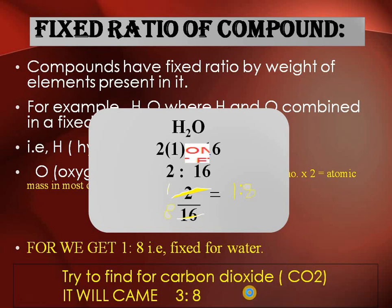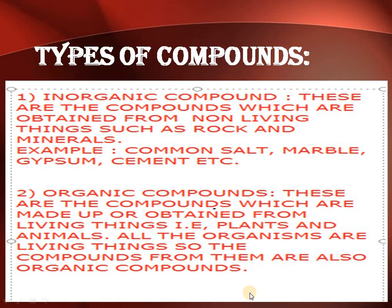Moving to the types of compounds: compounds are of two types — inorganic compounds and organic compounds. Inorganic compounds are obtained from non-living things such as rocks and minerals. Examples include common salt, marble, gypsum, and cement.